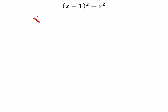Plus (x-1) squared, that's going to give you x² - 2x + 1, then minus z². See how jacked up that thing looks? No good.